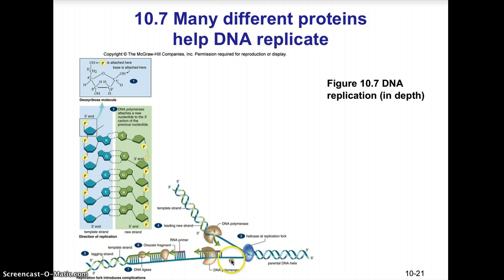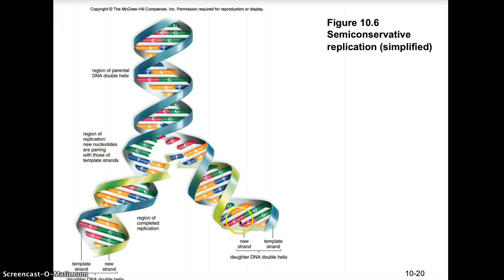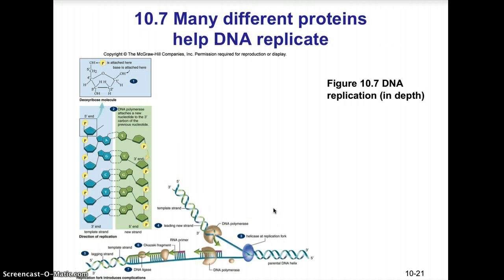On the other strand, called the lagging strand, replication also occurs in the five-prime to three-prime direction, but it can only be done in fragments called Okazaki fragments. DNA helicase needs to expose nucleotides, then DNA polymerase reads the newly exposed nucleotides, but eventually hits a point where the strand has already been synthesized. It must wait until helicase opens the molecule further, then polymerase binds again. Those Okazaki fragments are then fused together by a third enzyme called DNA ligase, producing two semi-conservative daughter DNA molecules.